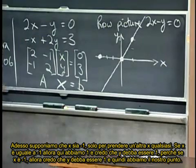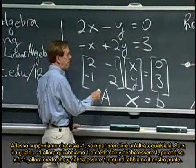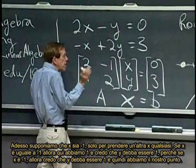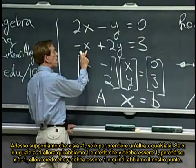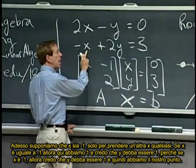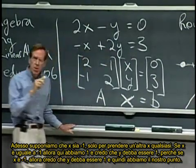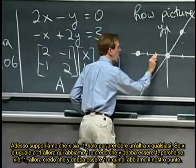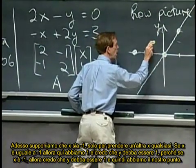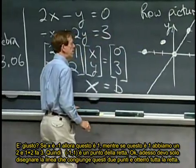Now let me say, well, suppose x is minus one. Just to take another x. If x is minus one, then this is a one. And I think y should be a one. Because if x is minus one, then I think y should be a one, and we'll get that point. Is that right?